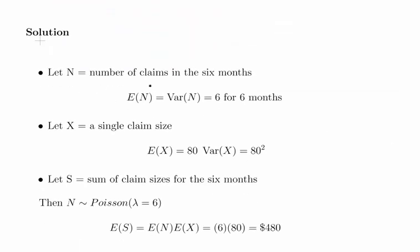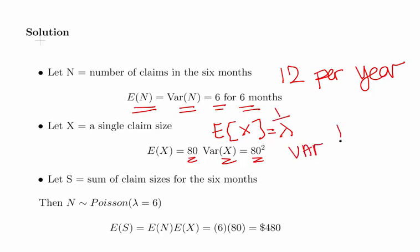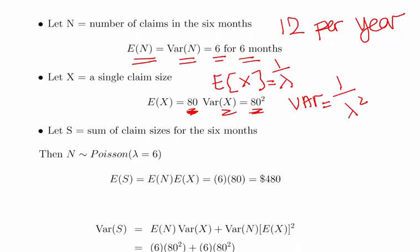Let N be the number of claims in six months. The expected value of N equals six, and the variance of N for a Poisson is also six. The expected value of claim size X is $80, and the variance of X is 80 squared — because for an exponential distribution, the expected value is 1/lambda and the variance is 1/lambda squared, so squaring the mean gives the variance.